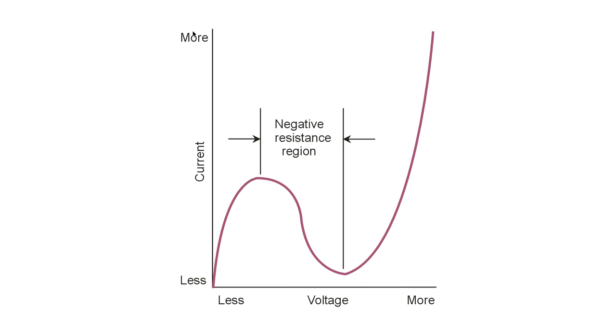What we're looking at here is a graph of current on the vertical scale as a function of voltage on the horizontal scale.